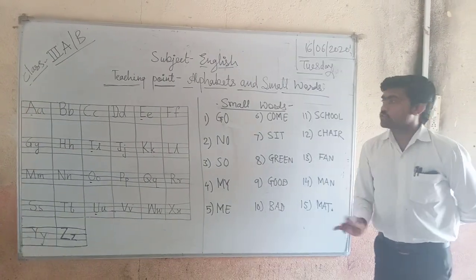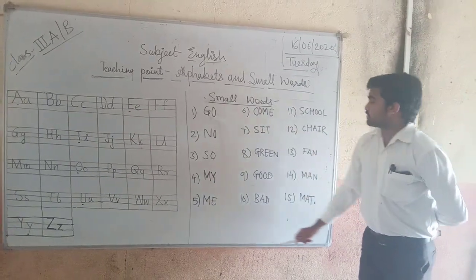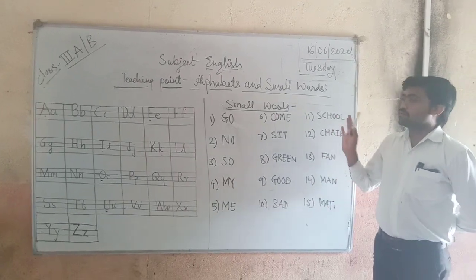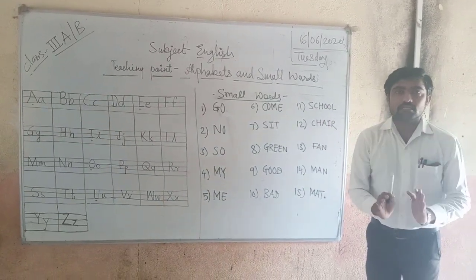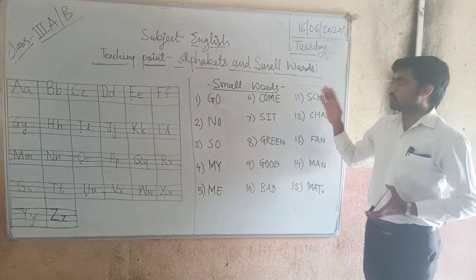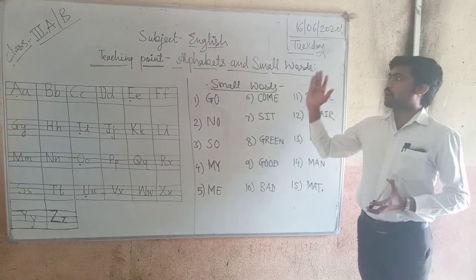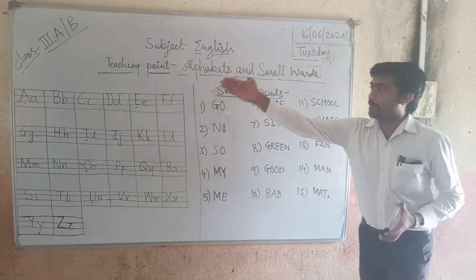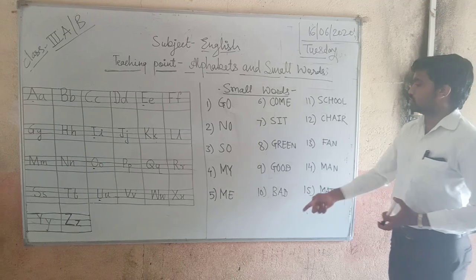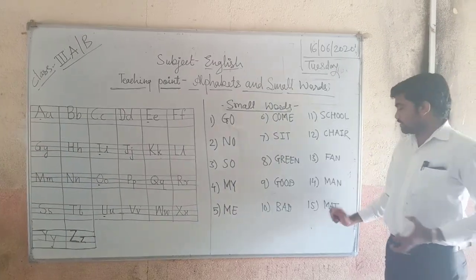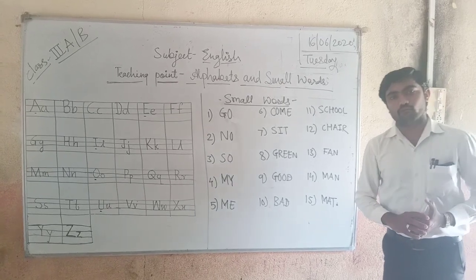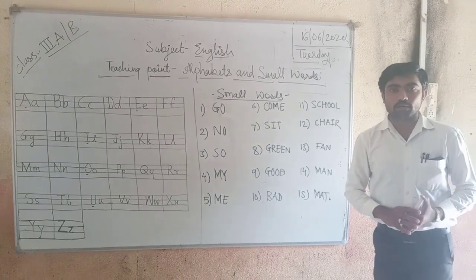Got it? So today we learned these 15 small words. You have to understand these words properly. Today's homework is: write down these alphabets — capital and small letters — in your notebook, and write these 15 small words two times. This is your today's homework. Thank you so much.